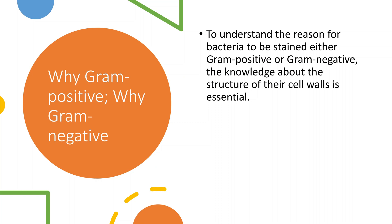To understand why this difference — why some bacteria are gram positive and why some bacteria are gram negative — we should have a clear idea about the structure of the cell wall. The difference in the cell wall makes this difference. Because of the cell wall, only some bacteria are gram positive and some bacteria are gram negative. So the cell wall is the one that makes the difference.